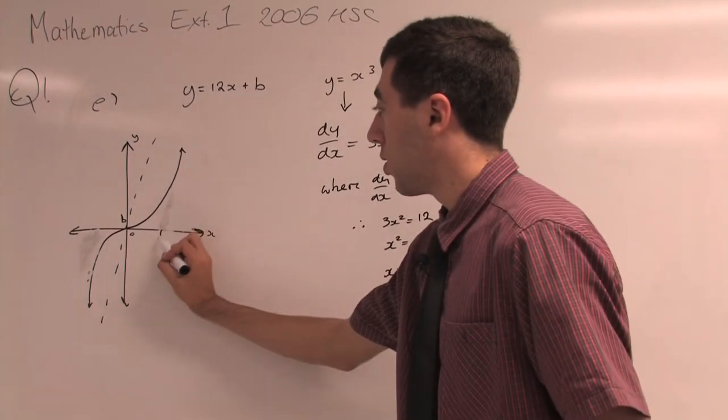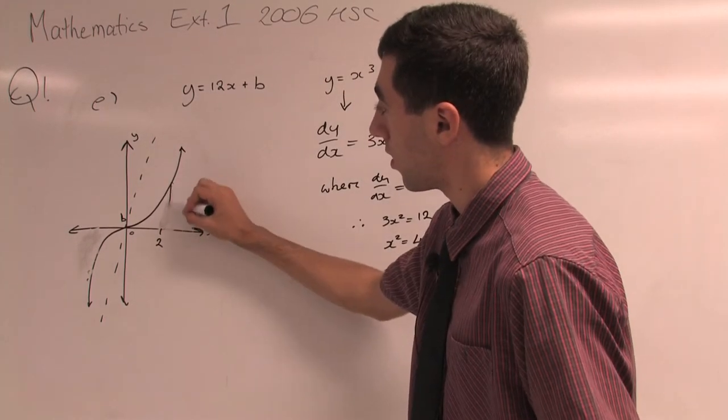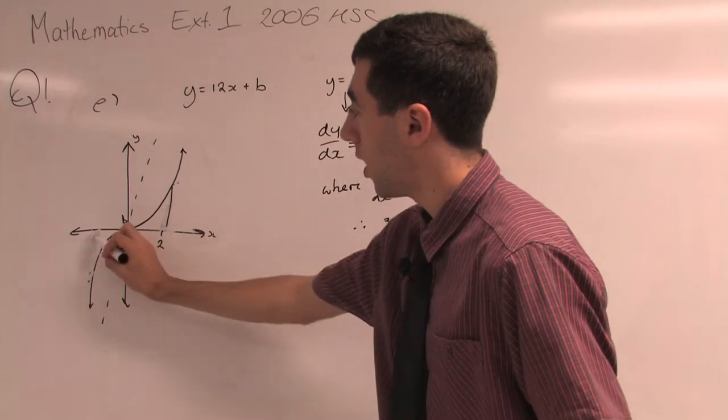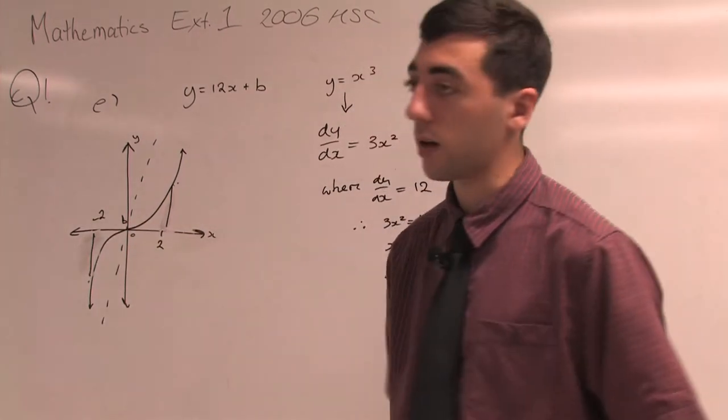This just means that at x = 2 the gradient of this curve equals 12 here, and at x = -2 the gradient is also equal to 12 there.